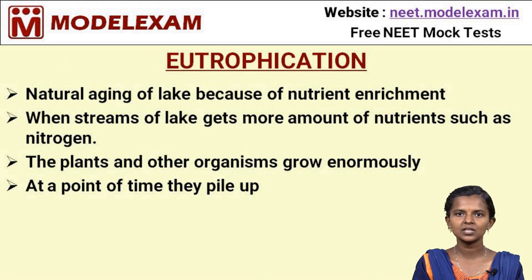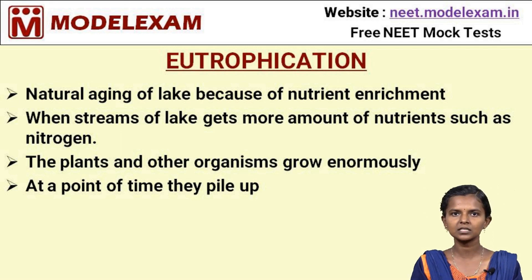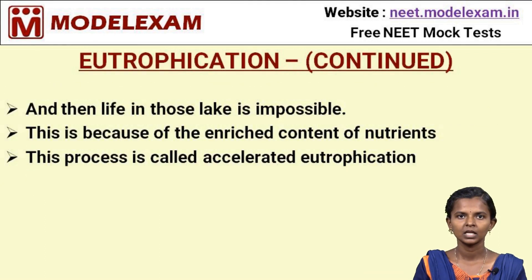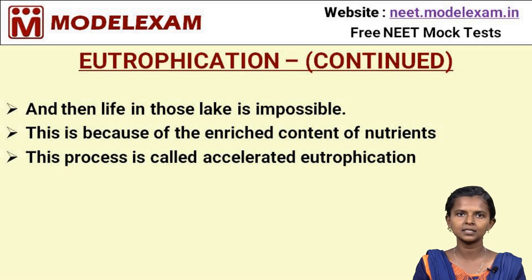Eutrophication. Eutrophication is the natural aging of a lake. It happens because of the enrichment of nutrients at an enormous level. When a lake's streams receive large amounts of nutrients such as nitrogen, the plants and other organisms growing in the lake area grow enormously and eventually pile up. This causes the natural aging of the lake, which is termed eutrophication — also called accelerated eutrophication — and makes life impossible in that lake.